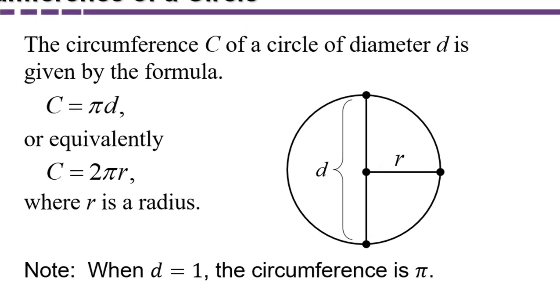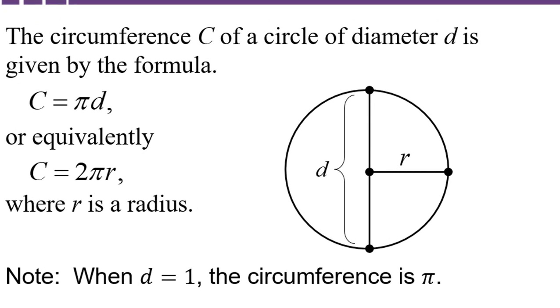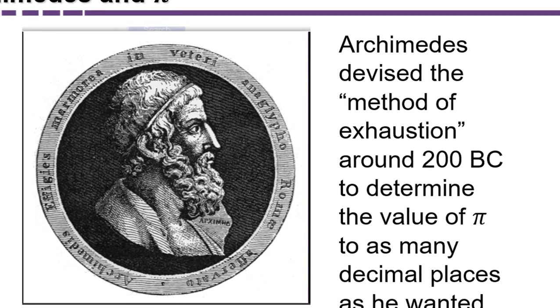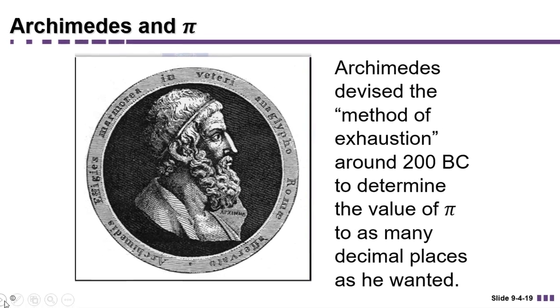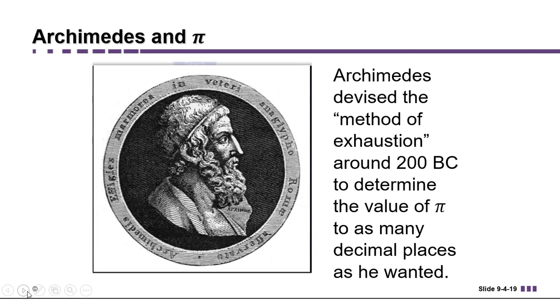Notice that when the diameter is equal to 1, if you plug into the top formula, you get that the circumference is equal to the number pi. So Archimedes devised this method of exhaustion around 200 BC and he used it to determine the value of pi, and he could get pi accurate to as many decimal places as he wanted with no calculator.